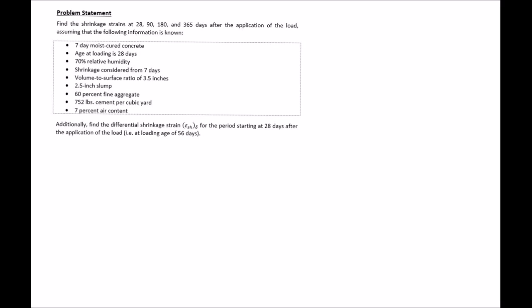In this problem we're going to look at finding and estimating shrinkage strain at different time periods using the ACI 209 approach. This is just one example of an approximation method or estimation method for shrinkage, but it's very similar to many others that you can use. The first step is we need to calculate our required coefficients, and these coefficients are based on our given material and environmental conditions.